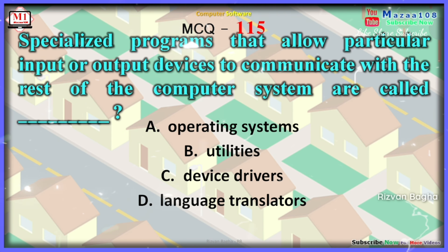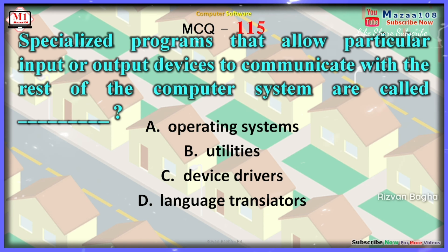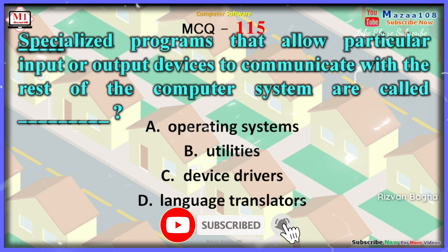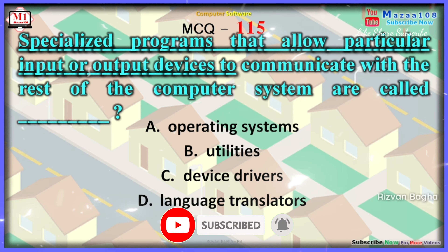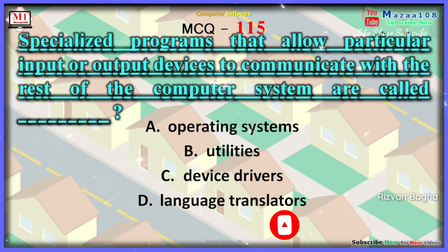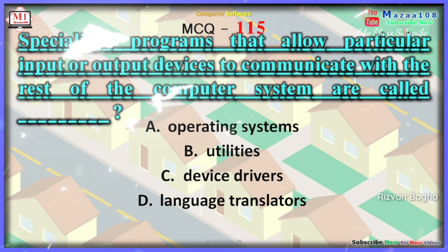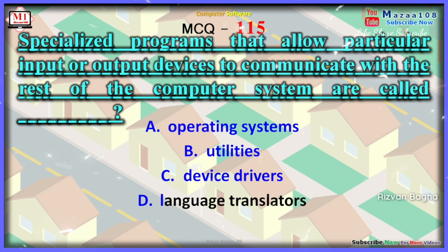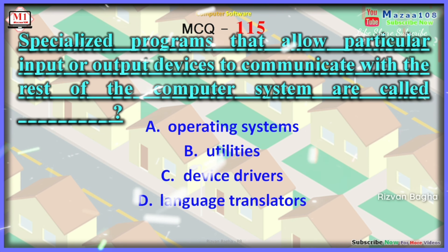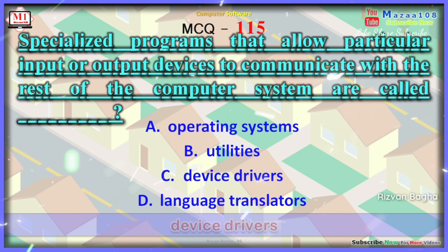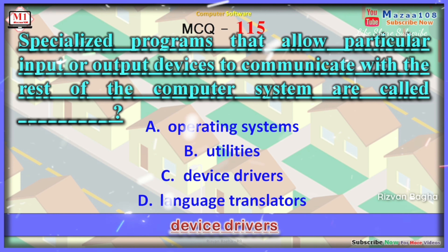Question: Specialized programs that allow a particular input or output device to communicate with the rest of the computer system are called — Option A: operating system, Option B: utility, Option C: device driver, Option D: language translator. The correct answer is device driver.